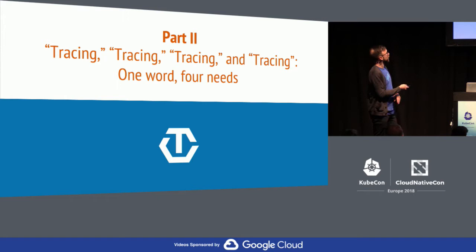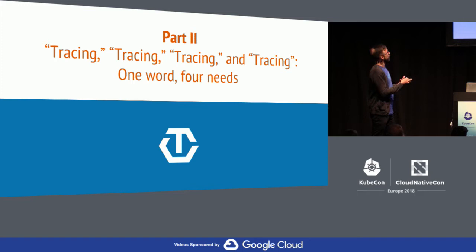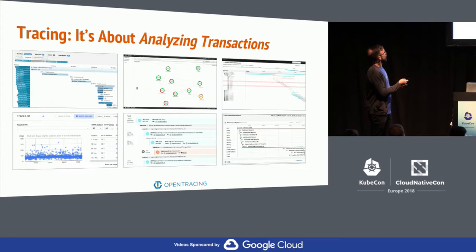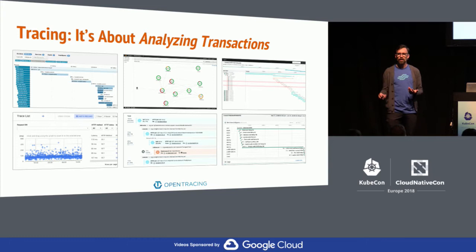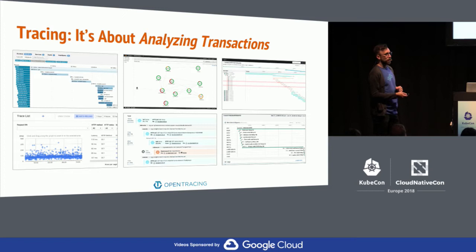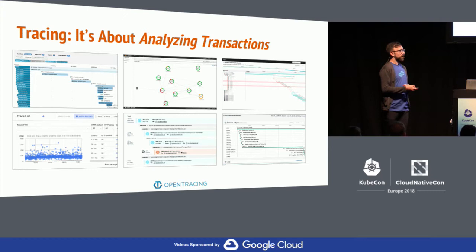Now we get to the meat of the talk. Let's talk about tracing, tracing, tracing, and tracing. There are four things described by the same word, which is causing a lot of confusion. Tracing is about analyzing transactions — these are six screenshots from six tracing solutions, some open source, some not. If you talk about doing tracing, what you're saying is that as an operator you'll look at a tool like one of these and deduce something about your system.